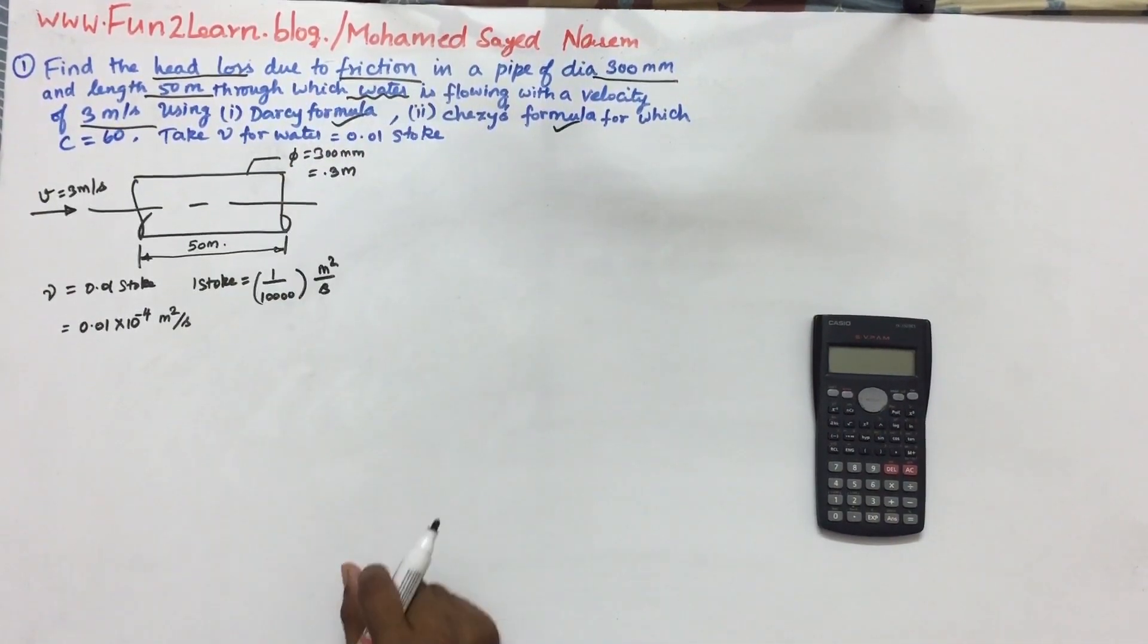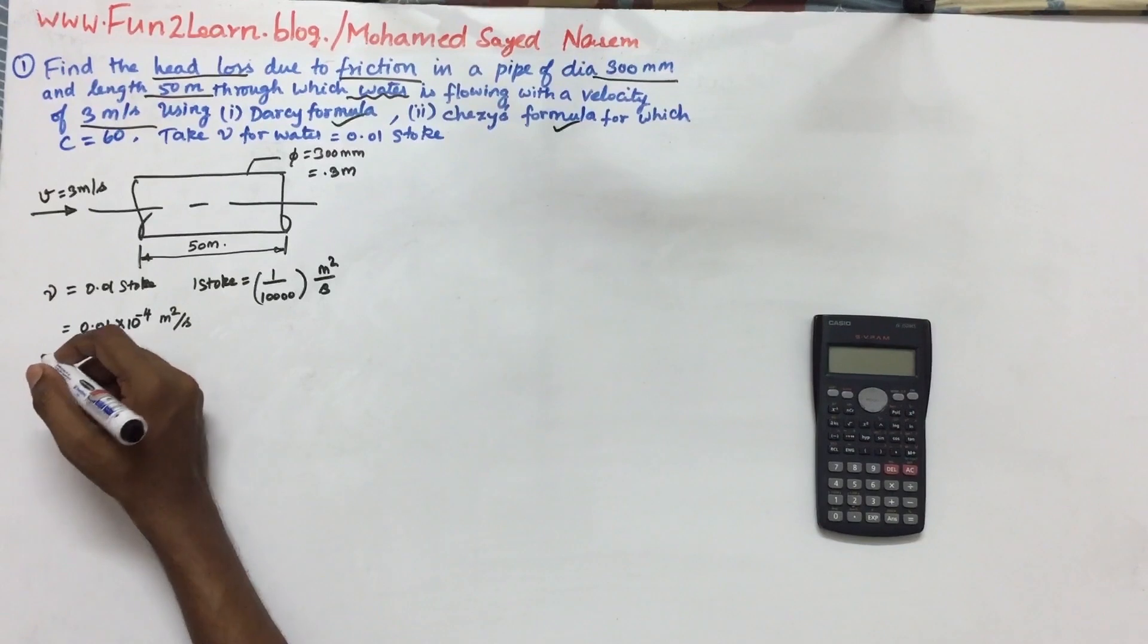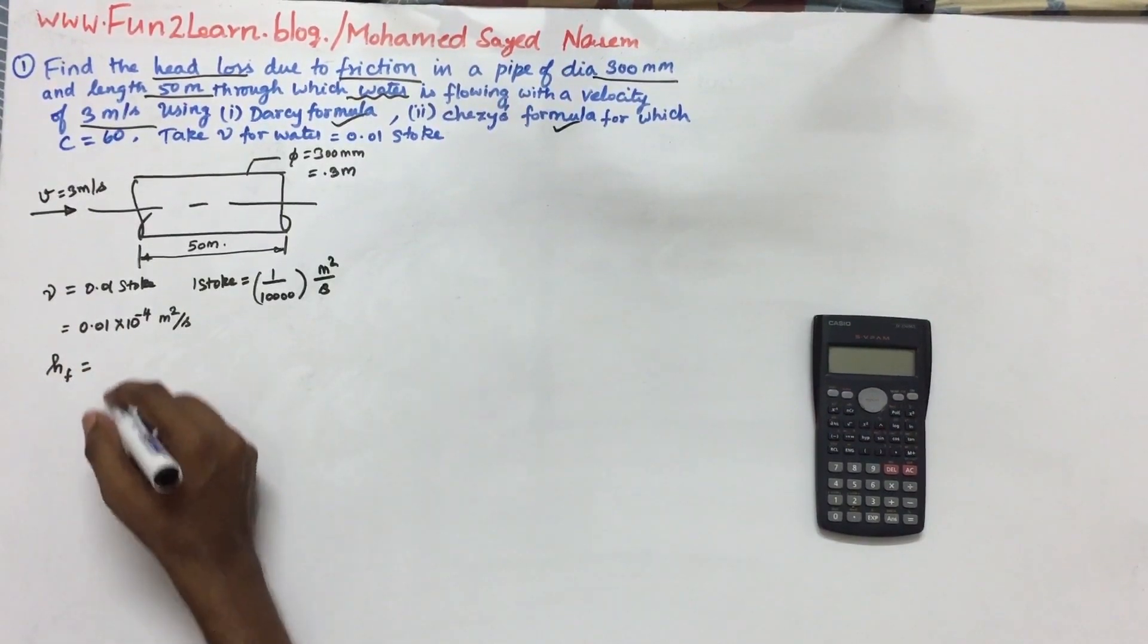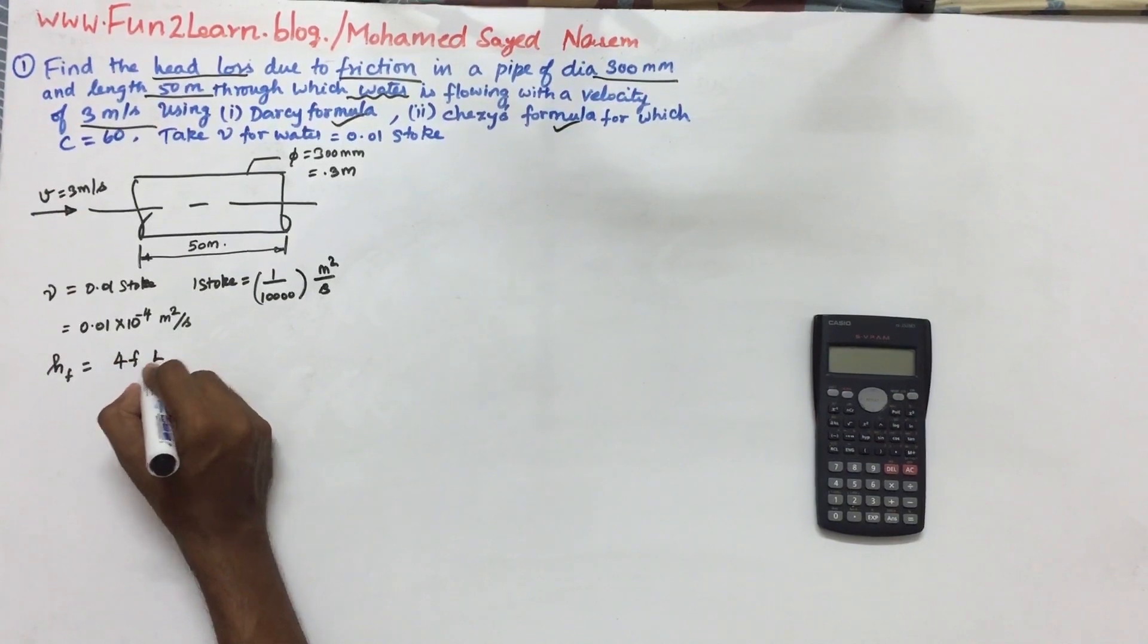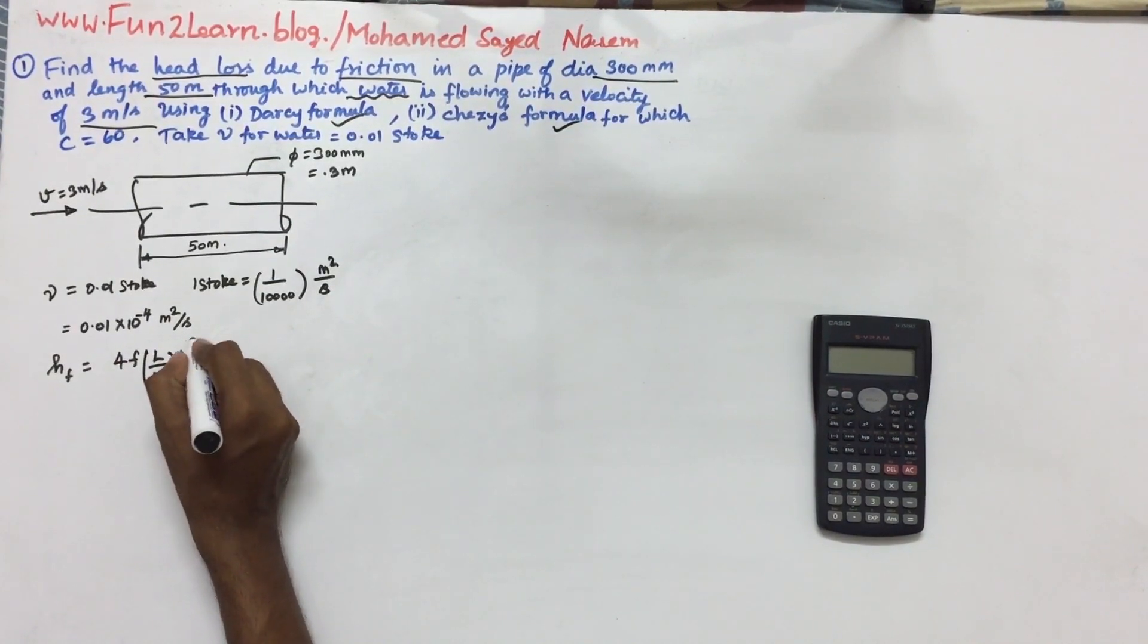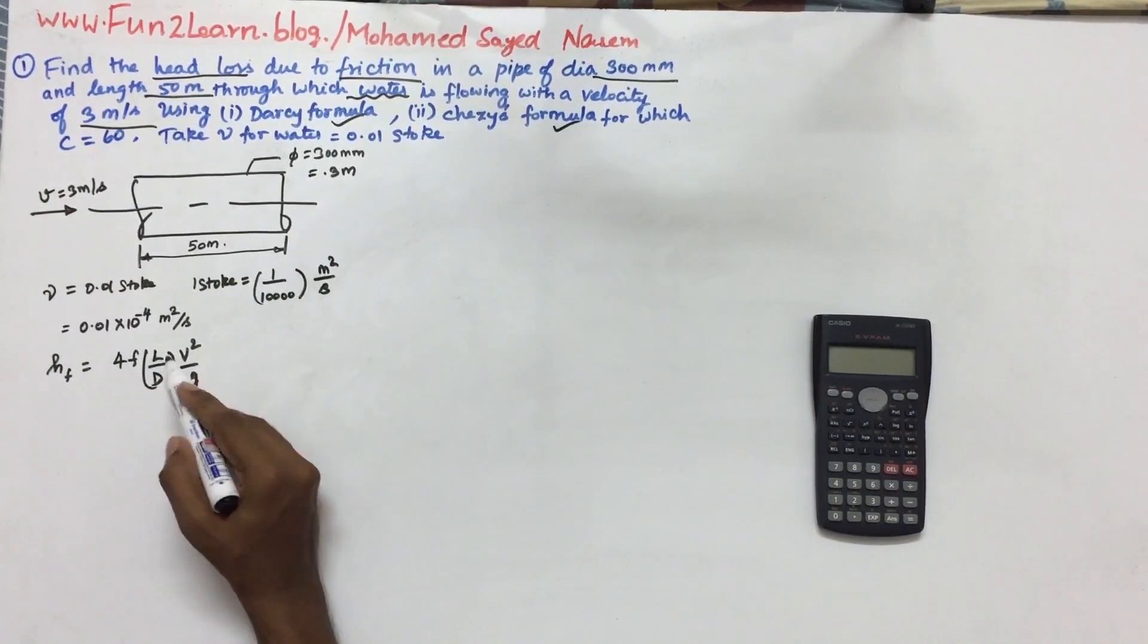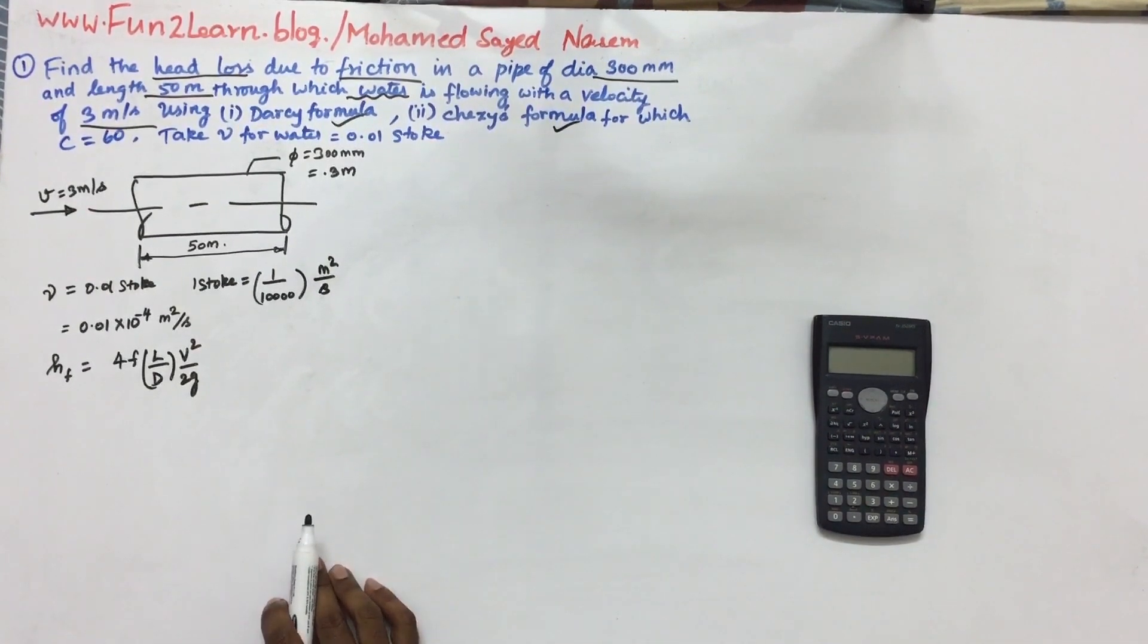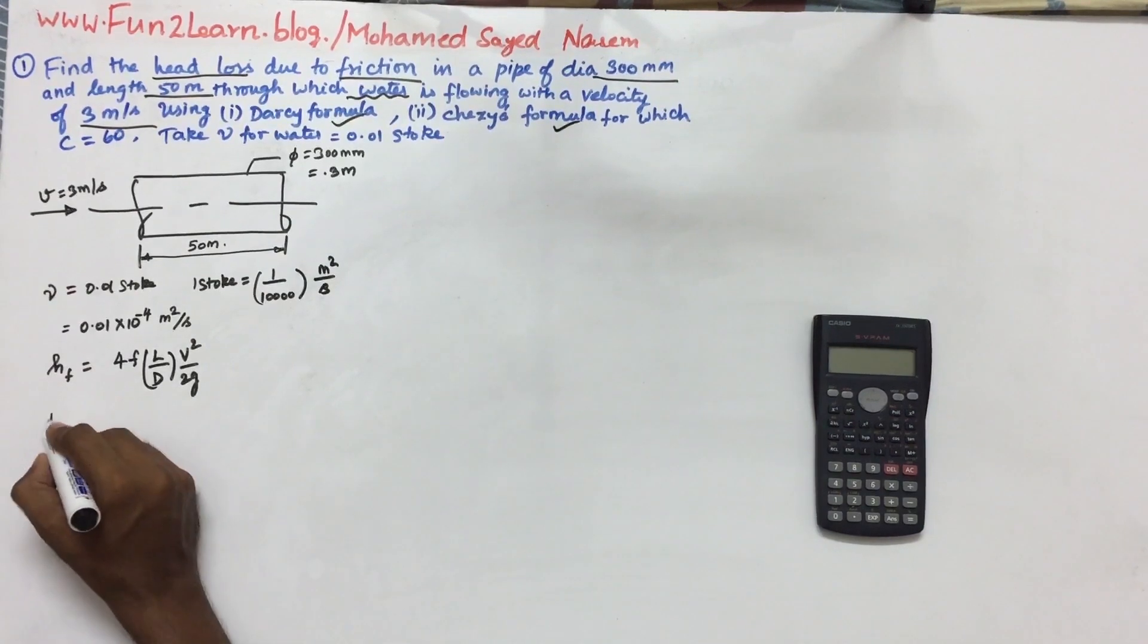Now we have Darcy's formula. The head loss due to friction is hf equals 4F L by D, V squared by 2G. We know length, velocity, diameter, and g, but what is f?